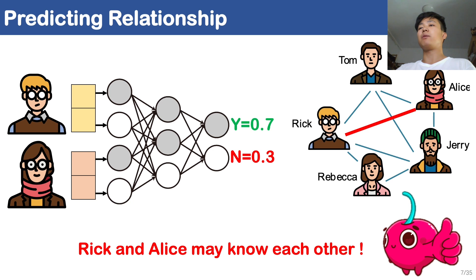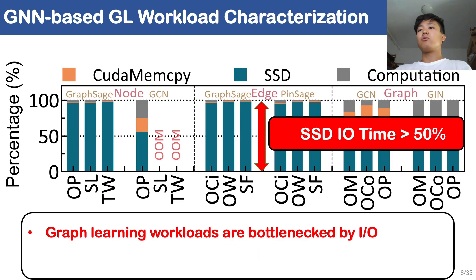An additional edge may be added to the original social network graph between Rick and Alice. As large-scale graph learning problems become more and more popular, like the widely used commercial recommender systems, the growth of cost overhead of graph learning systems should be noted, especially when the graph data cannot fit in memory. To understand these graph learning workloads, we break down the execution time of commonly used graph learning algorithms into three stages: loading data from host memory to GPU memory, loading data from SSD, and GPU computation time. As we can see, the time spent on SSD I/O operations accounts for more than 50% of total execution time, indicating that SSD I/O is the bottleneck.